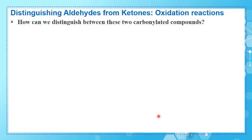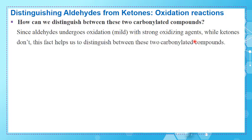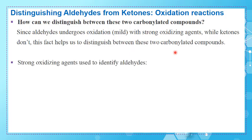The question now is how to distinguish between aldehydes and ketones. We can distinguish based on the following fact: aldehydes undergo mild oxidation with strong oxidizing agents, while ketones do not. This property allows us to tell these two carbonyl compounds apart. The strong oxidizing agents used to identify aldehydes include Tollen's reagent, Fehling's test, Schiff's reagent, potassium dichromate, and potassium permanganate.